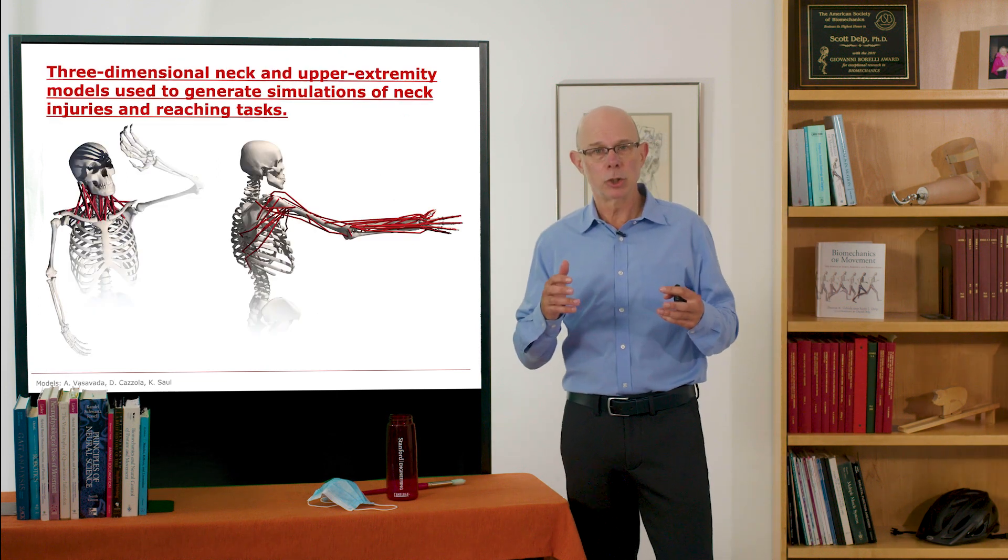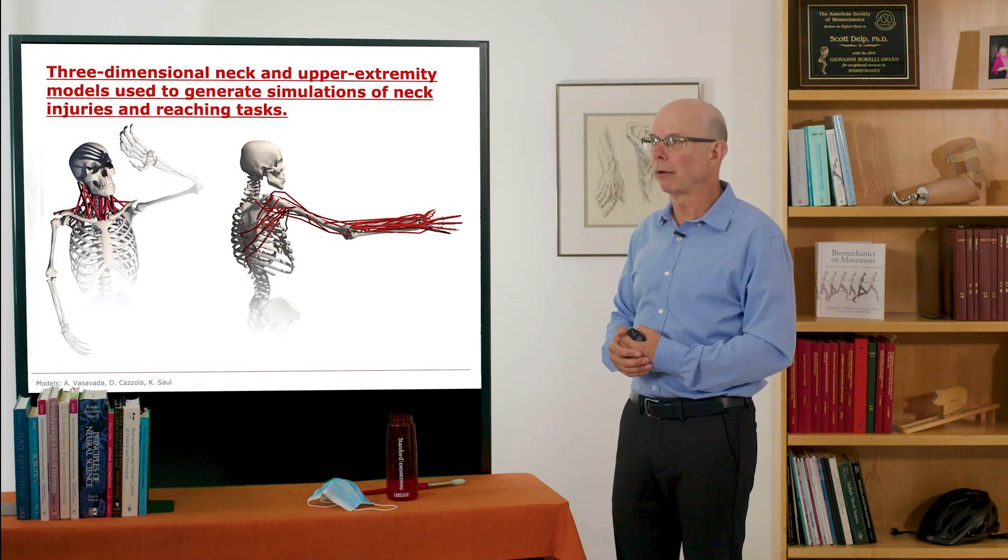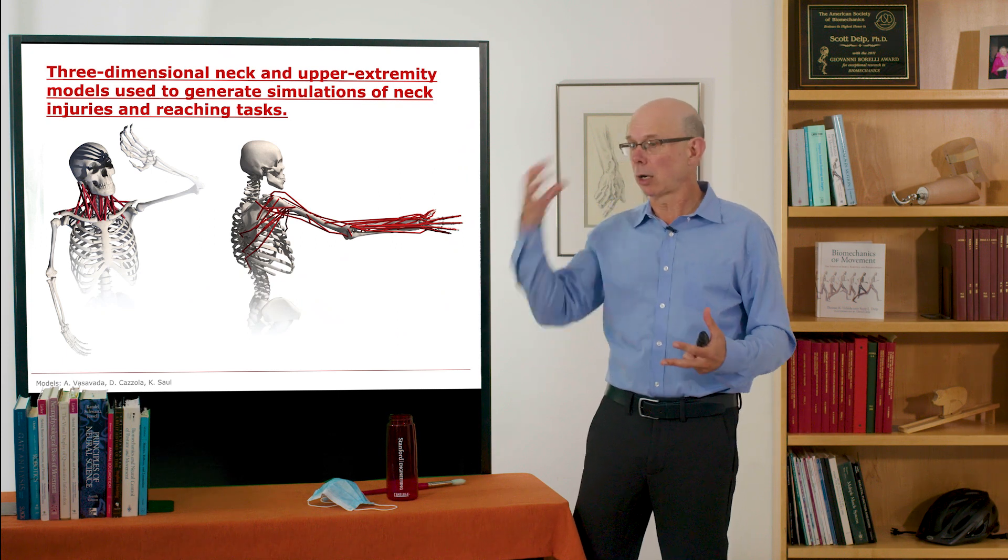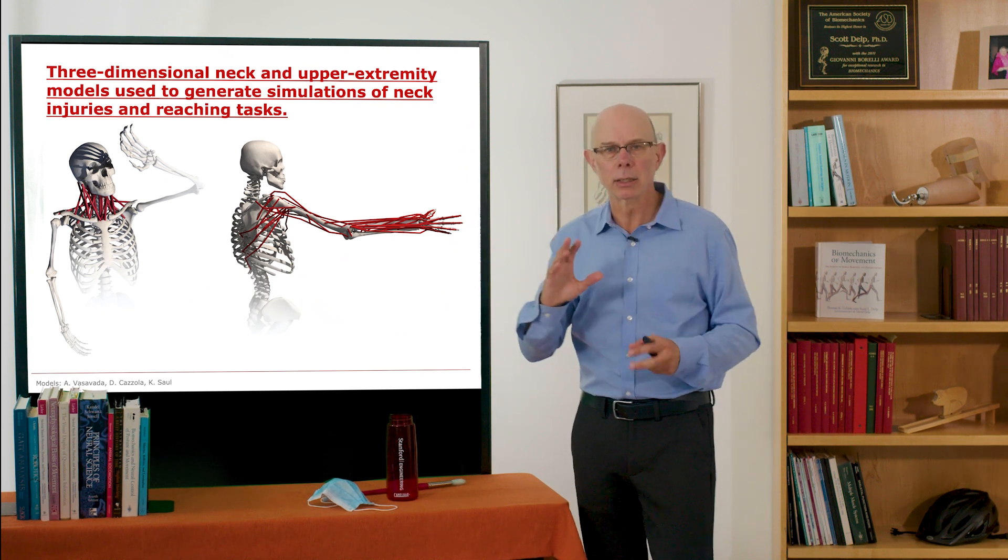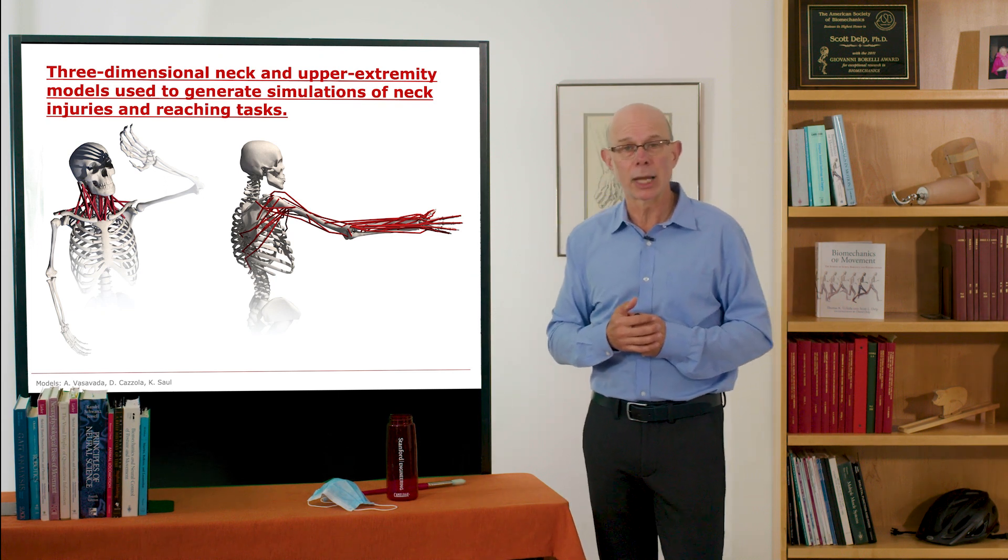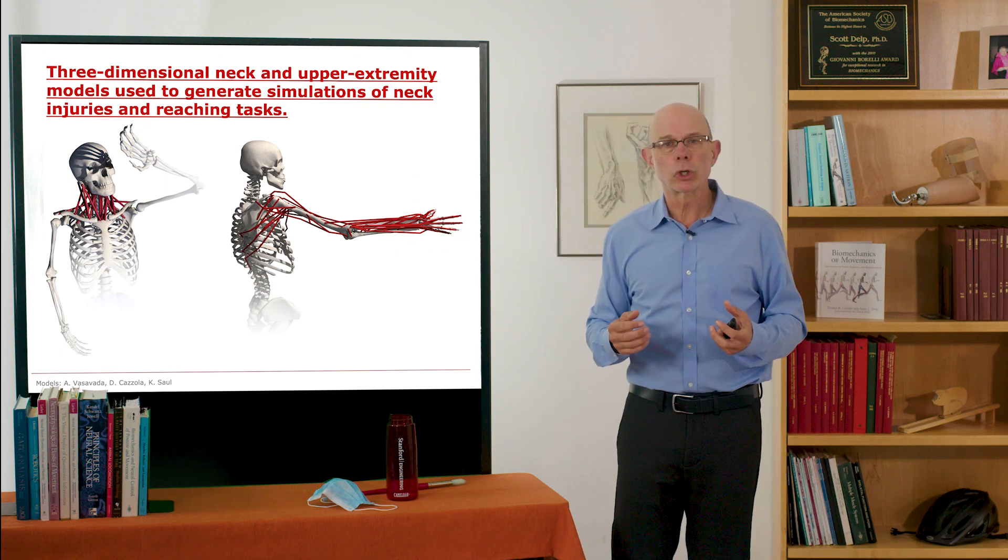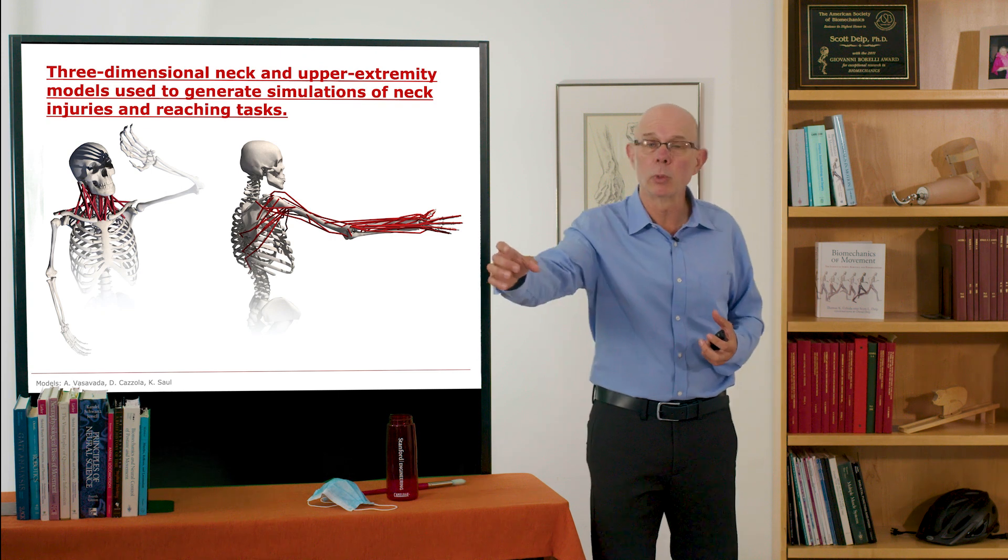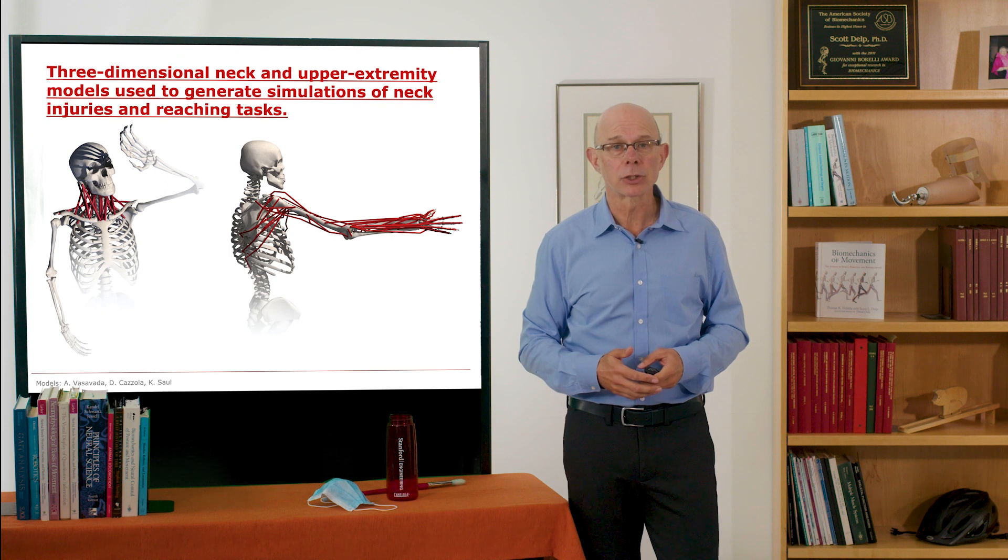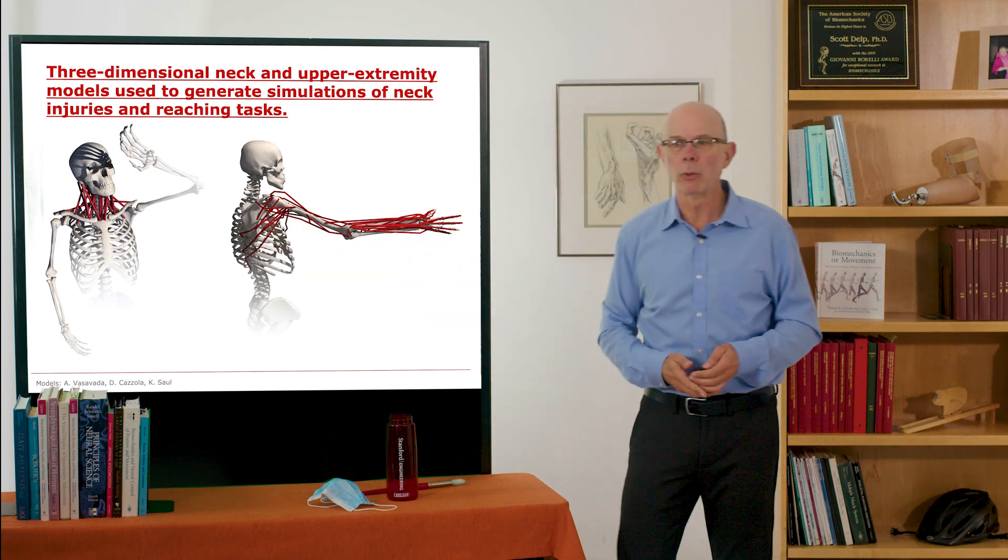But in some instances, you need a more complex model. What I'm showing here is a three-dimensional model of the neck that's been used to study injury mechanics. For example, when a soccer ball hits the head, we can analyze the contributions of muscles and ligaments to the motions of the vertebral segments. And here's a three-dimensional model of the upper extremity that was used to design surgeries to restore reaching and grasp after various injuries that might have paralyzed certain muscles. In those cases, these more complicated three-dimensional models are really quite appropriate.